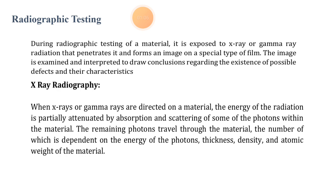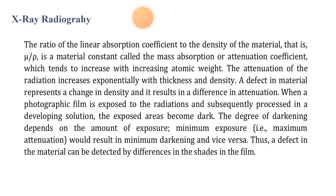In X-ray radiography, when X-rays or gamma rays are directed on a material, the energy of the radiation is partially attenuated by absorption and scattering of photons within the material. The remaining photons travel through the material, the number of which depends on the energy, thickness, density and atomic weight of the material. The ratio of linear absorption coefficient to the density of the material is the material constant called mass absorption, which tends to increase with increasing atomic weight.